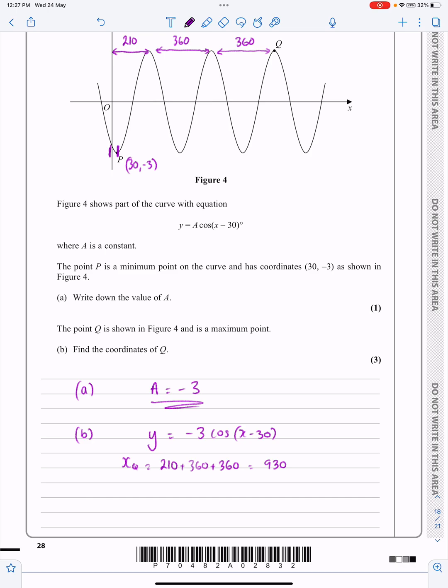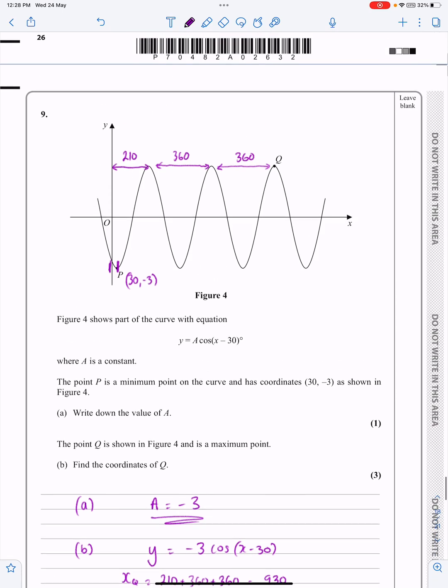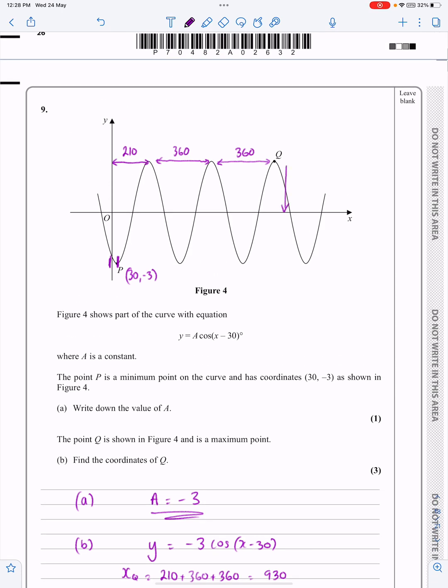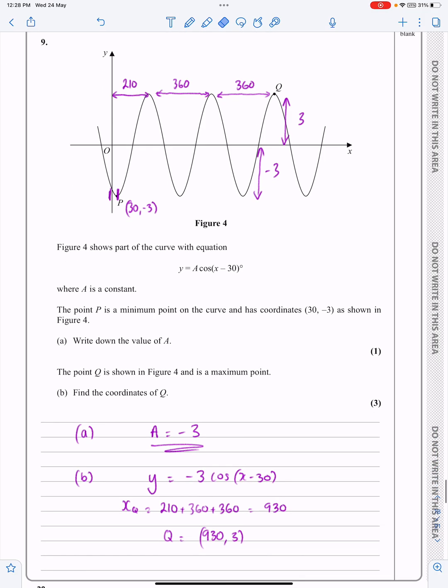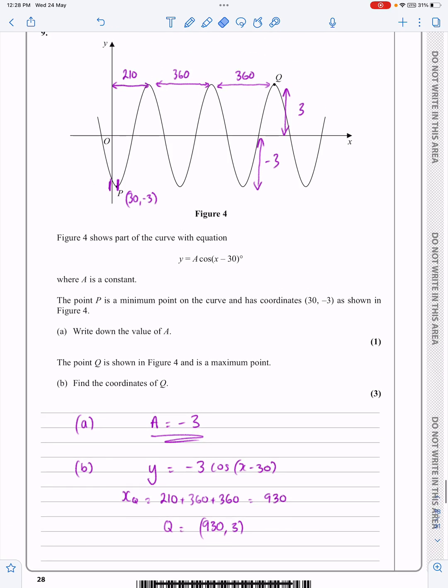So, my actual coordinates for Q are going to be 930 and then 3. You can either work out the 3 by putting 930 into that, or probably more common sense, just understanding that these two values are 3 and minus 3, because the whole thing's been stretched, scale factor 3 from our original graph, which we know has a height of 1 and a minimum height of minus 1. So, funny little question, that one there. Hopefully that will make sense to you.